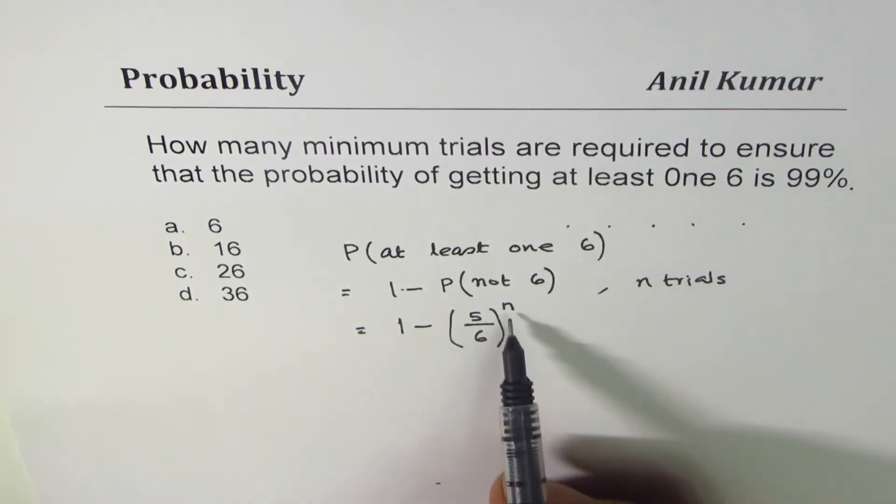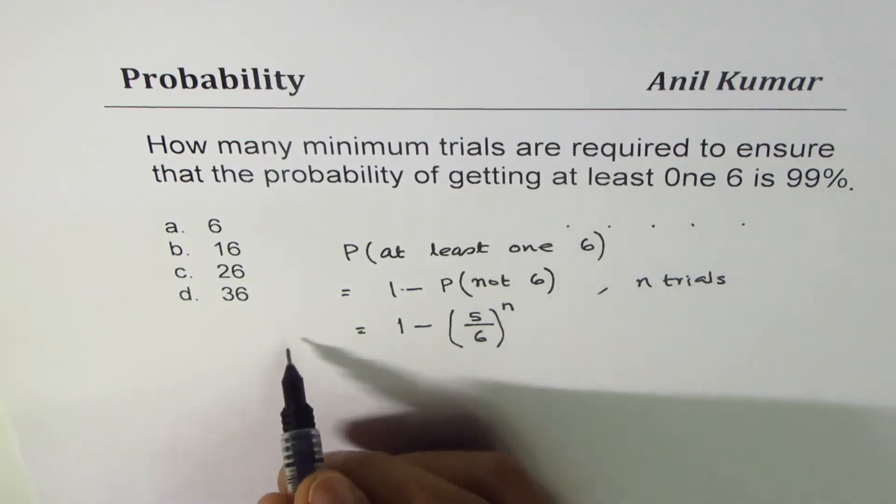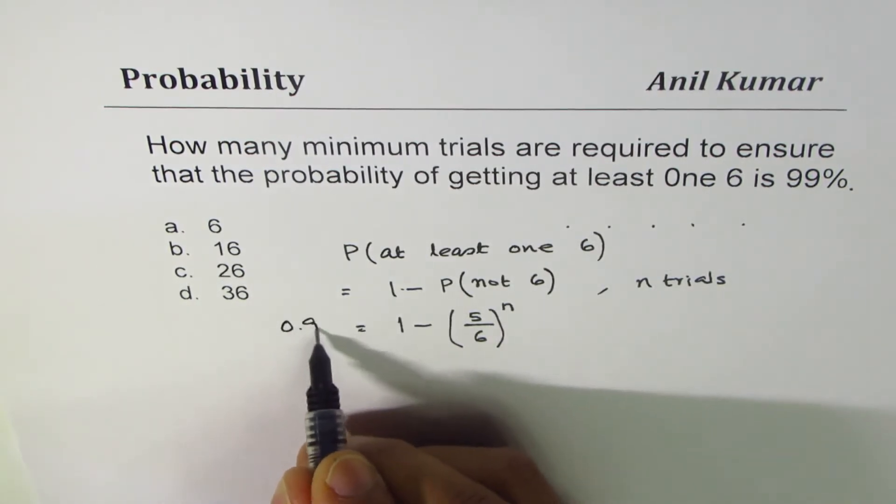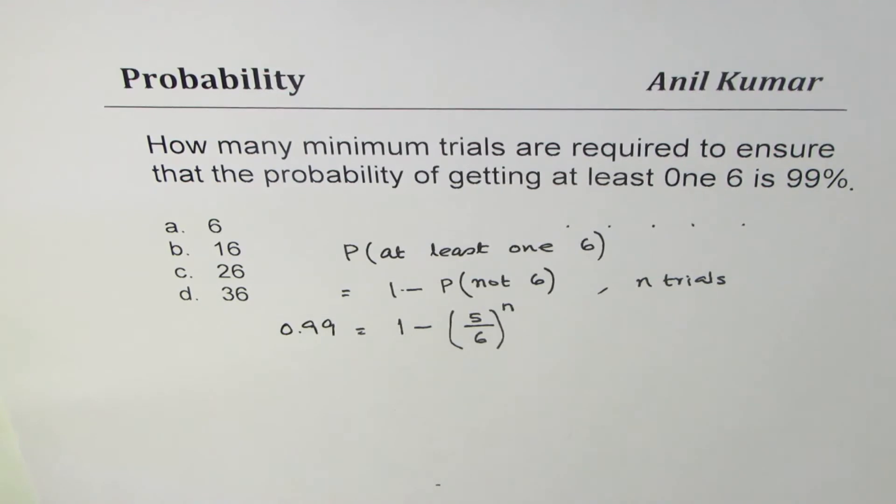In this particular question we are given the probability; we need to find value of n. The probability is 99 percent, which in decimals I can write as 0.99.